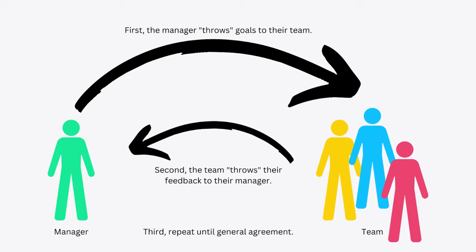Catchball is a back-and-forth technique for improving goals and ideas. It works when a manager shares their goals, objectives, or ideas with their team and then throws them to the team for feedback. The team then throws their feedback back to the manager, and you repeat this process until there's general agreement. That creates a bi-directional feedback loop, which ultimately improves the quality of your goals and objectives.